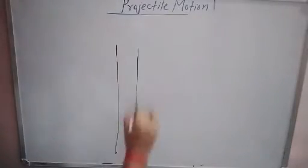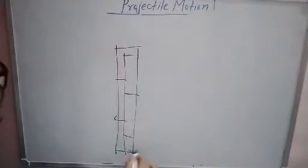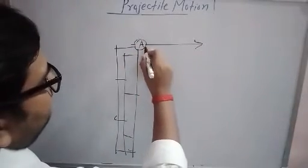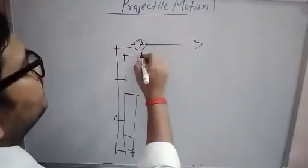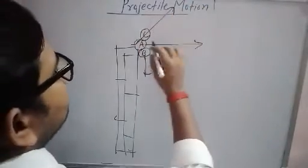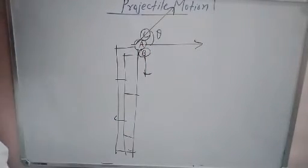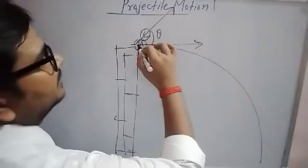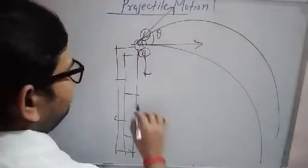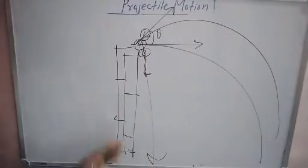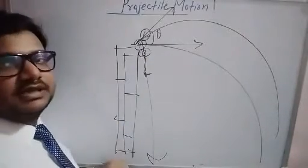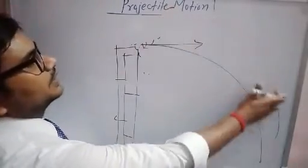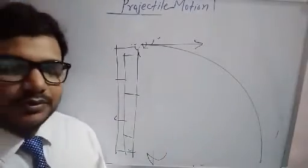Now we will study projectile motion from some height. Suppose there is a building, and from the top of this building you have thrown objects in different ways: object A is thrown horizontally, object B is thrown vertically downward, and object C is thrown at an angle above the horizontal. All objects are released from the same point but follow different paths. For this type of motion, you cannot use the formulas derived for projectiles launched from the ground.